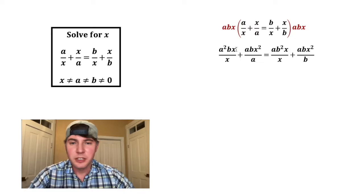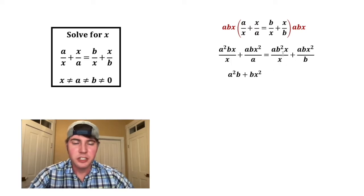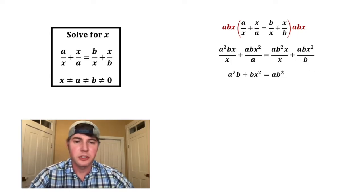For this first term, these two x's cancel out, which gives us a squared b. For this one, the a's cancel out, which gives us bx squared. For this one, the x's cancel, which gives us ab squared. And for this one, the b's cancel, which gives us ax squared.